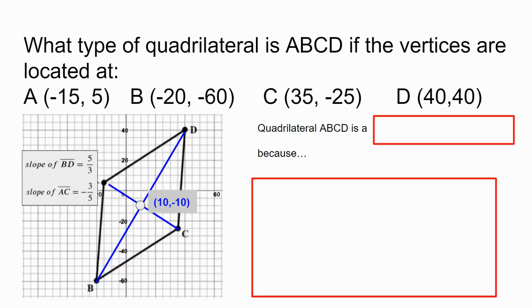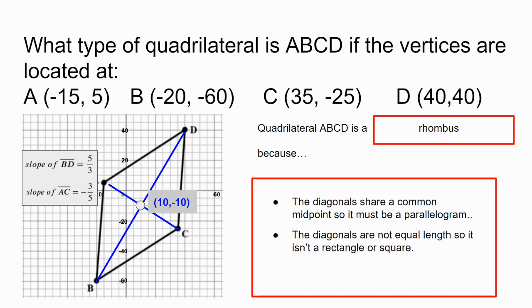This gives us another strategy to identify the shape. We know quadrilateral ABCD is a rhombus. And how do we know this? We know this because since the diagonals share a midpoint, that means that each diagonal bisects one another. Therefore, it must be a parallelogram. Since the diagonals are not of congruent length, it can't be a rectangle or a square. However, the diagonals are perpendicular to one another, as we see from the negative reciprocals on the slopes. Therefore, we know it must be a rhombus. And that is how you use coordinate geometry to classify triangles and quadrilaterals.